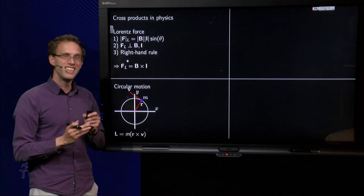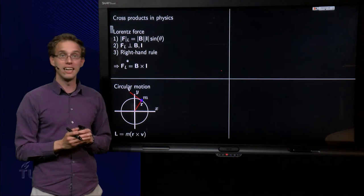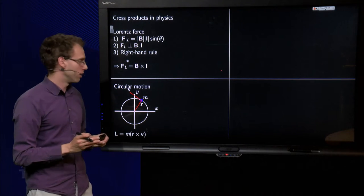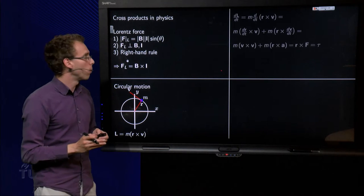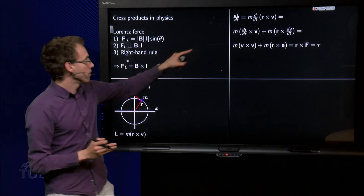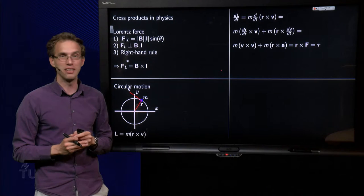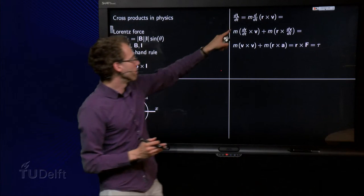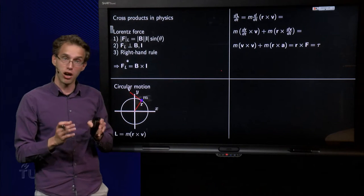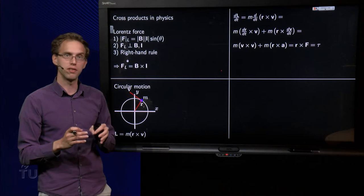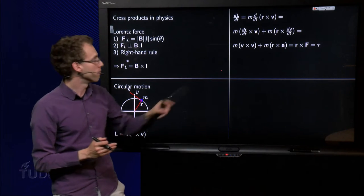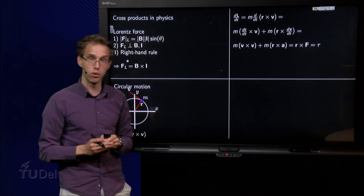Now, what if you want to change this angular momentum of the particle m? Well, that is possible. So what happens if we compute dL/dt? Then we have to compute the time derivative of r cross v. We can just treat the derivative as normal. For the derivative, we can treat the cross product as a normal product.